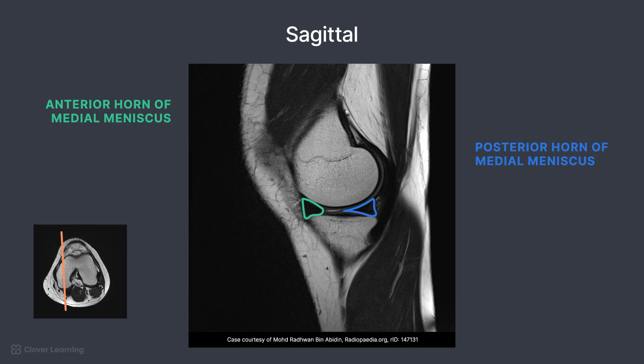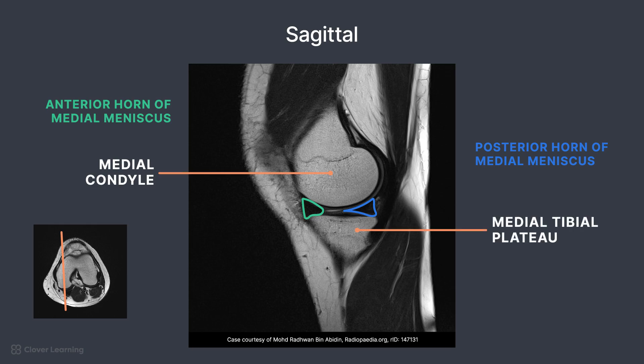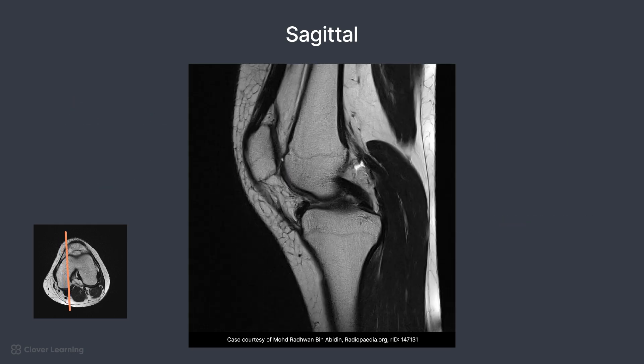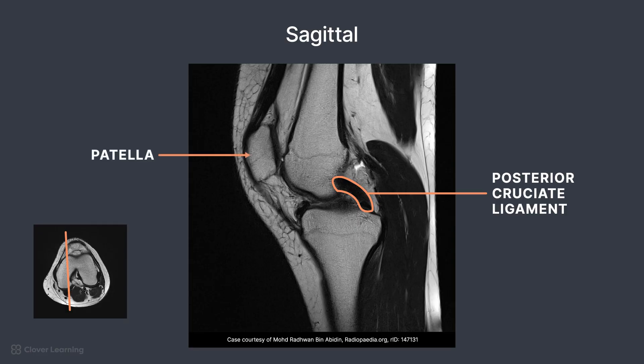These are sometimes described as dark triangles. Superior to the meniscus is the medial condyle and inferior is the medial tibial plateau. Arriving toward midline, the posterior cruciate ligament is demonstrated — it usually looks like a curved structure. The patella is demonstrated, with articular cartilage located on the posterior aspect to reduce friction in the joint.